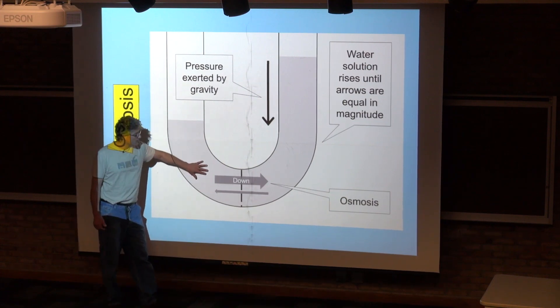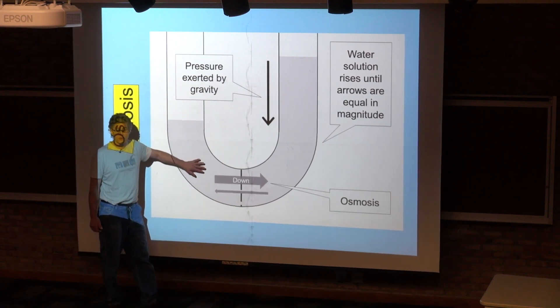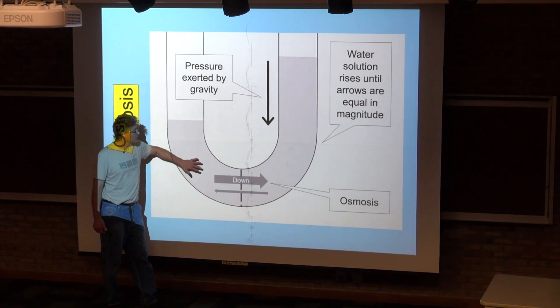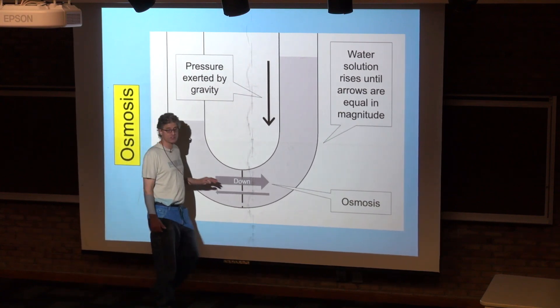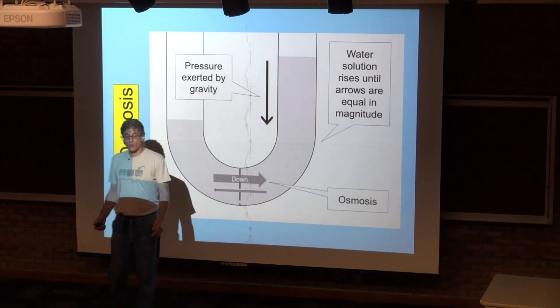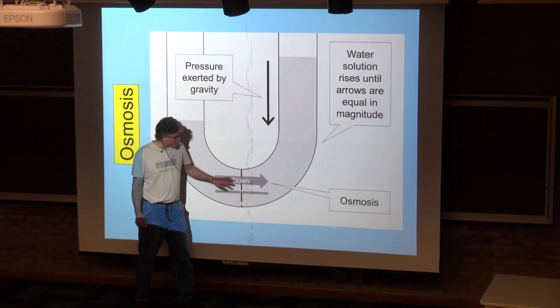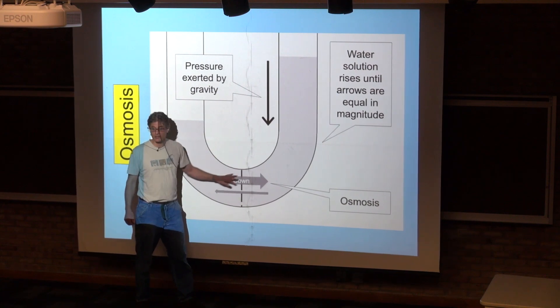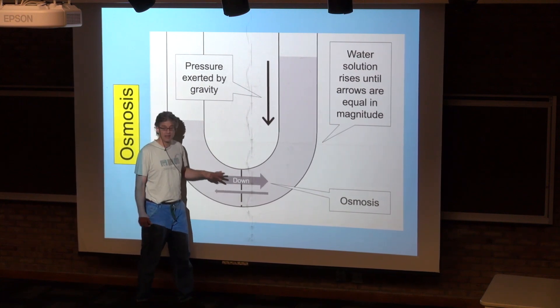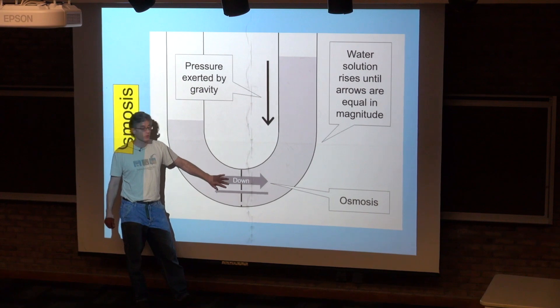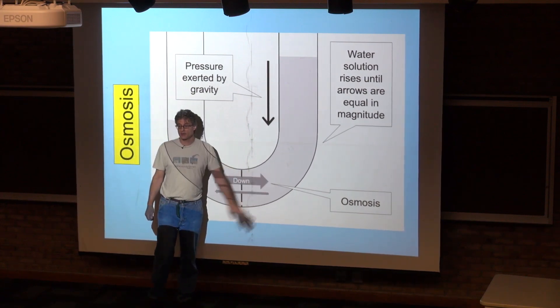The water will tend to move from a region of low solute concentration to a region of high solute concentration. Why? Because in order for water to cross this membrane, it's got to collide with the membrane. Water is going to collide at a higher rate on the side where there's more water than the side where there's less water.